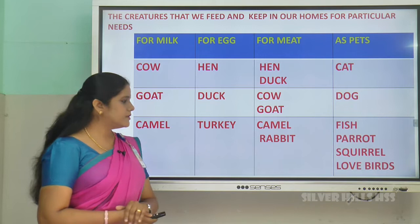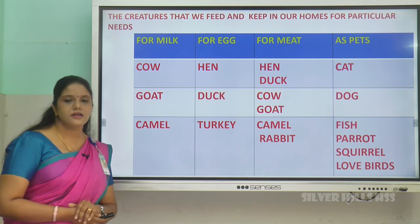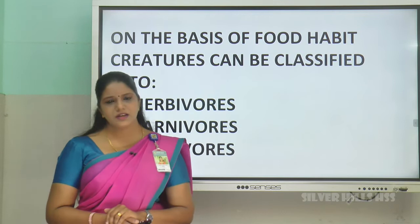Then comes pets. Cat, dog, fish, parrot, squirrel, love birds — we keep them as pets for amusement and companionship. So these are about domestic animals; they are also called farm animals.